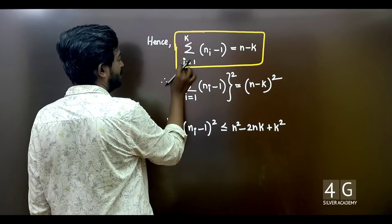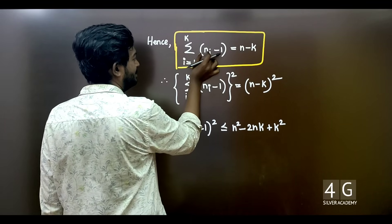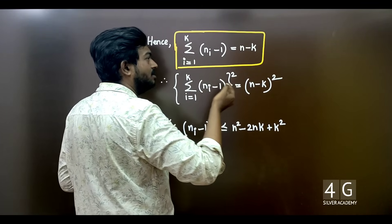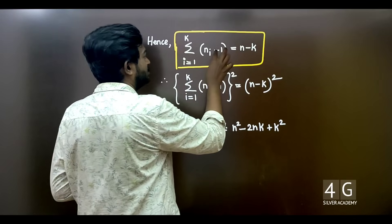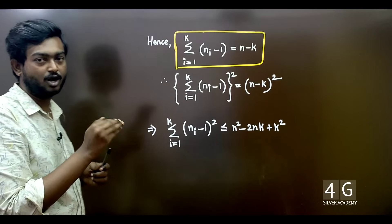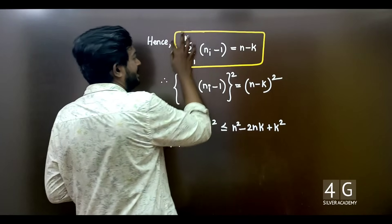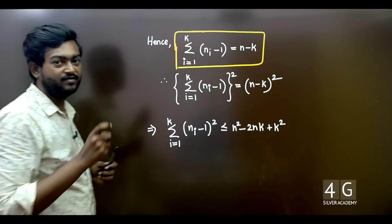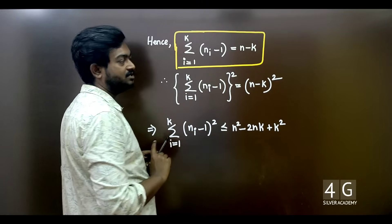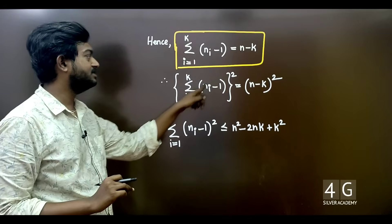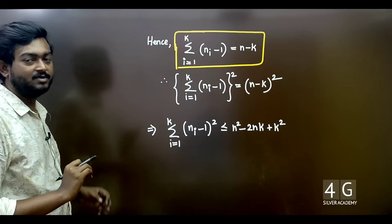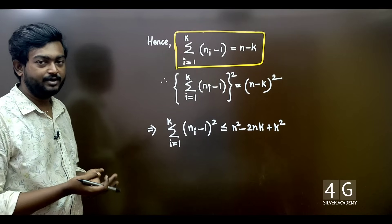Here we have a summation i equal to 1 to k. We have n number of vertices. We have ni minus 1, and summing gives n minus k. That is k components. We consider both greater than and less than component inequalities in the summation from i=1 to k.